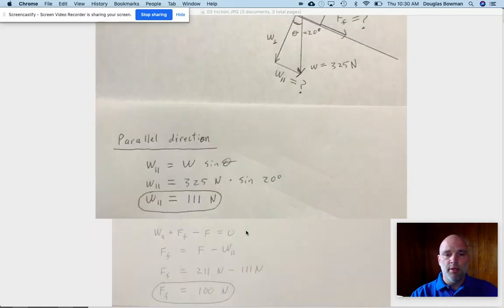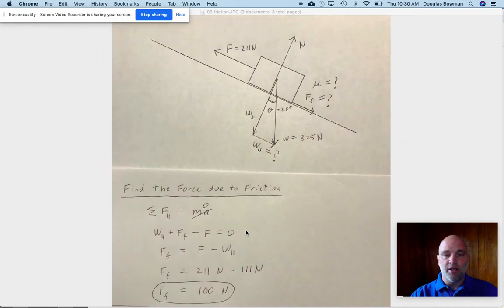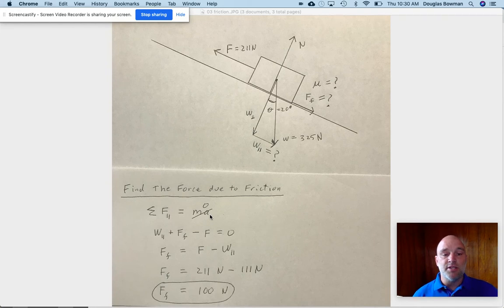The next part of the problem has us finding the frictional force. So what the problem asks, it says, if we add up all of the forces in the parallel direction, that's this one, the force due to friction, and the parallel component of the weight, we get zero because it's not accelerating. We're pulling it at a constant speed. So when we sum up the forces in the parallel direction, we get mass times acceleration, but that's zero.